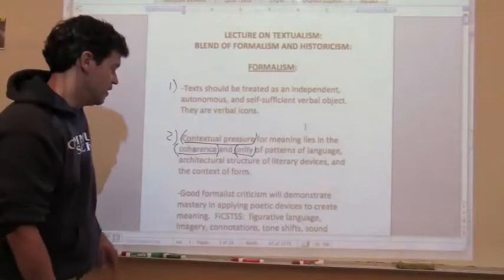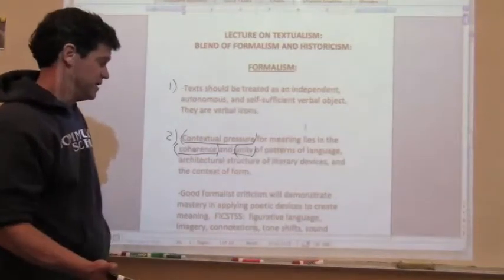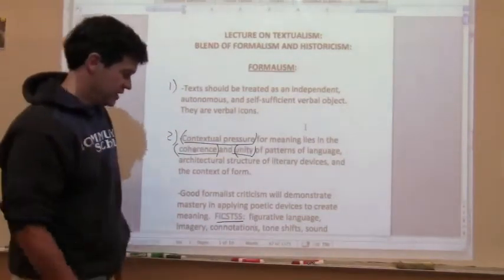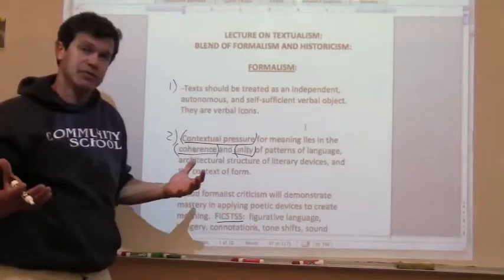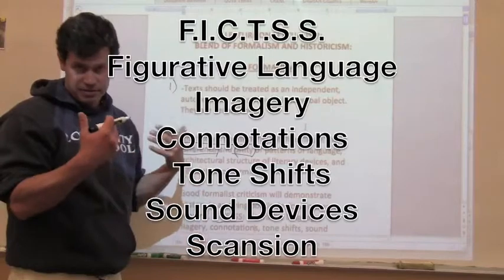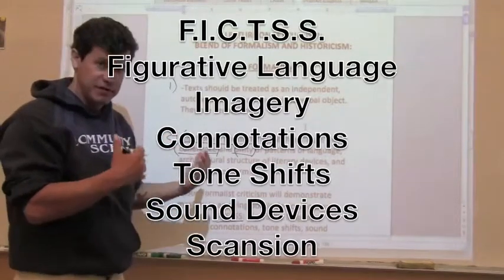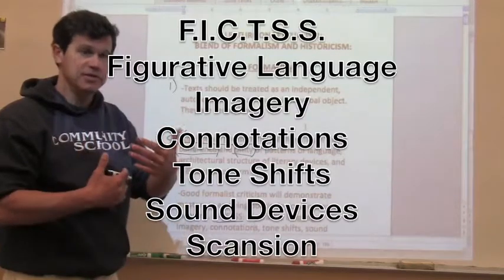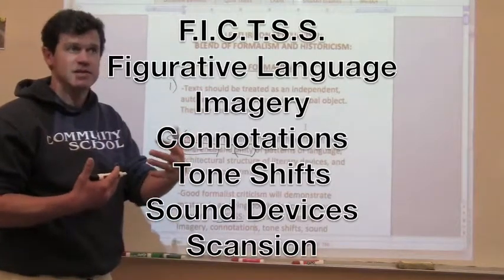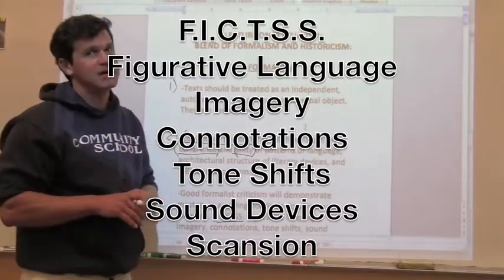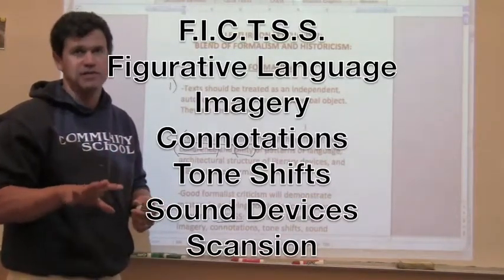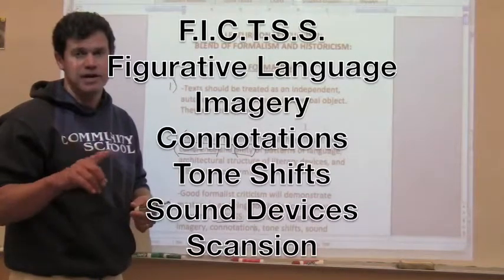Good formalist criticism will demonstrate mastery of devices. In freshman and sophomore year at the community school, you learn what FIX means. FIX is just an acronym to remind you of how to look at poetic devices in particular. So it's figurative language—metaphor, simile, personification, irony. Imagery—looking at the different images in a poem. Connotations—the emotional associations of words. Tone shifts—looking at how the voice carries a line differently at different times in the poem. And two S's: sound devices—alliteration, consonance, assonance—and scansion, the metrical variations in a poem.